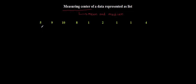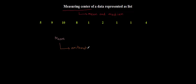For the ease of calculation, I have already written down a data list and I'm going to use this data list to calculate the mean and median. So first, let's talk about mean. Mean is the arithmetic mean, or the term we commonly use, the average of the data set.